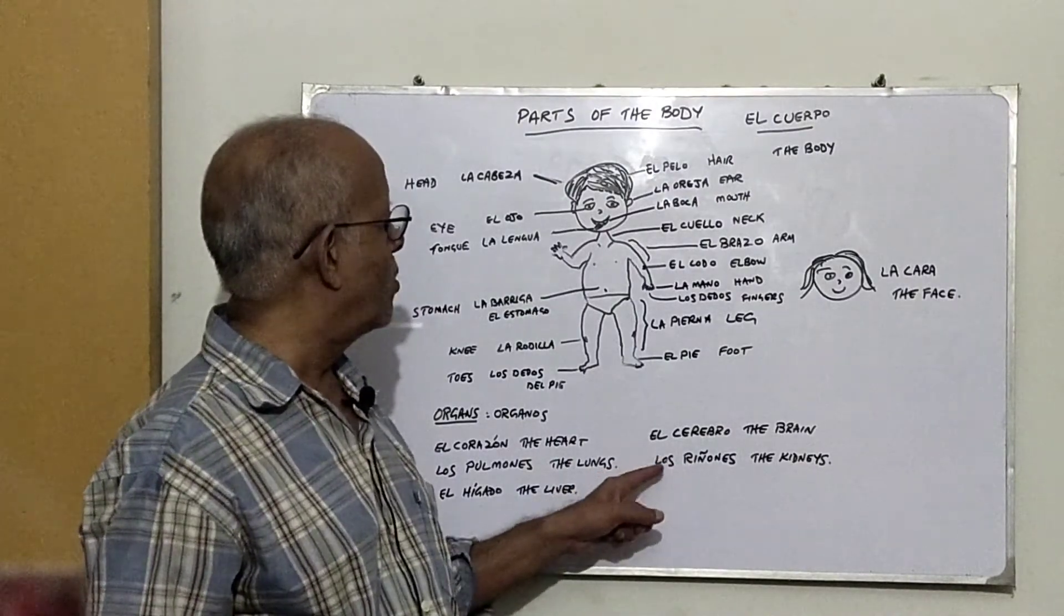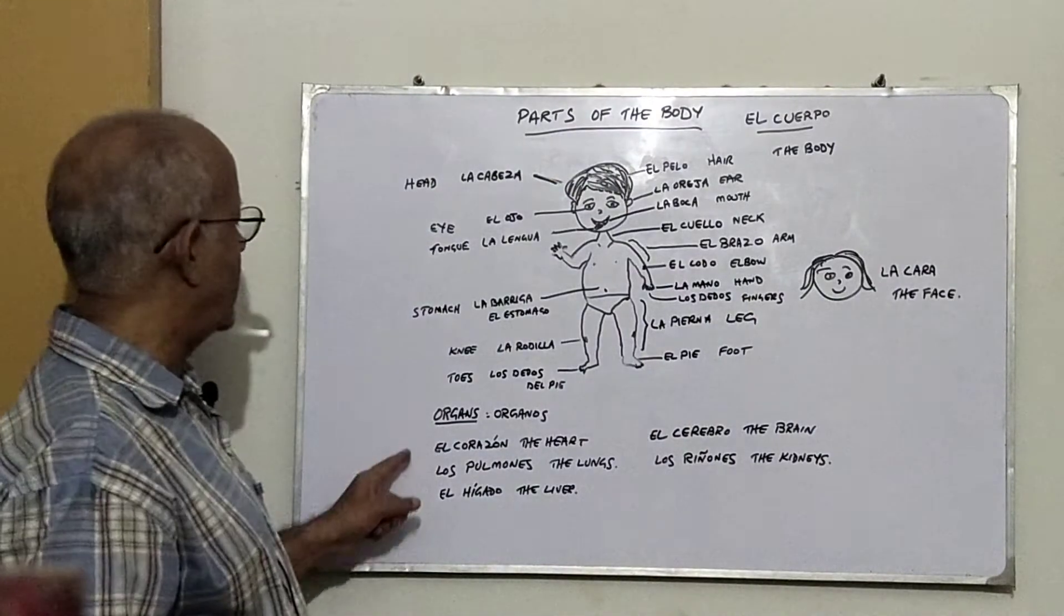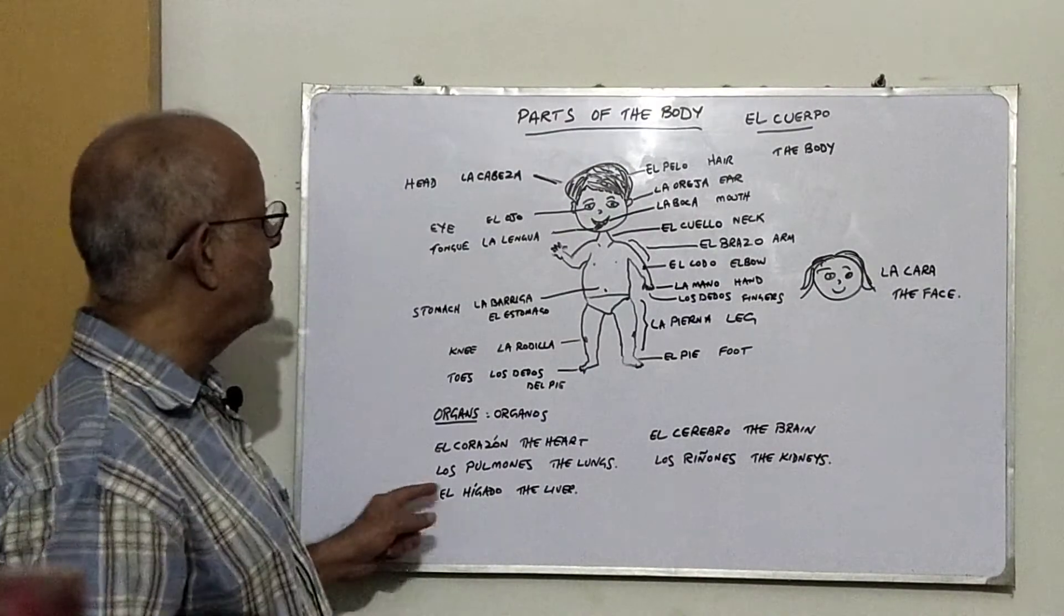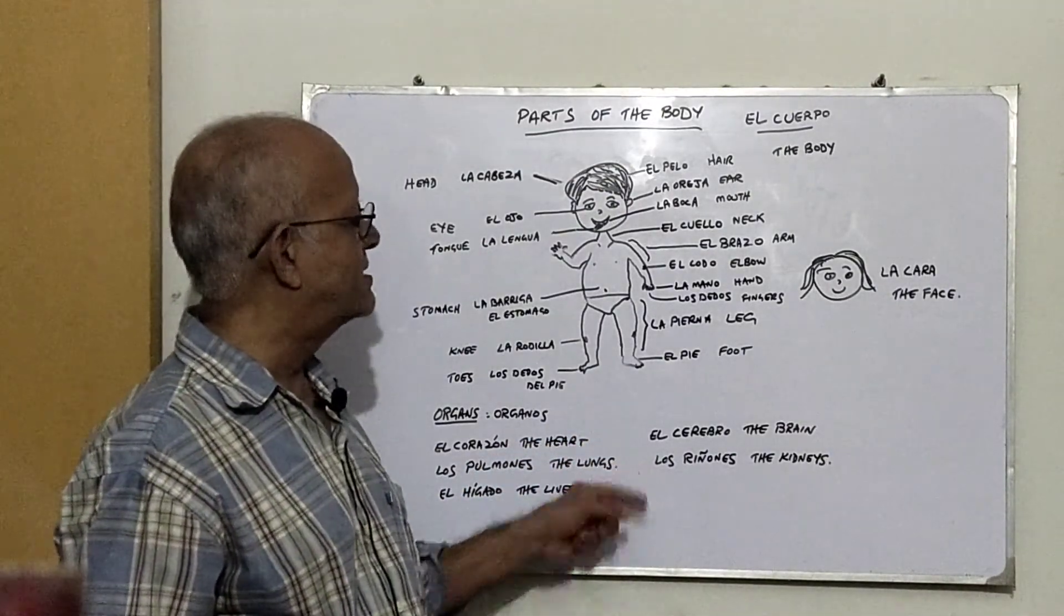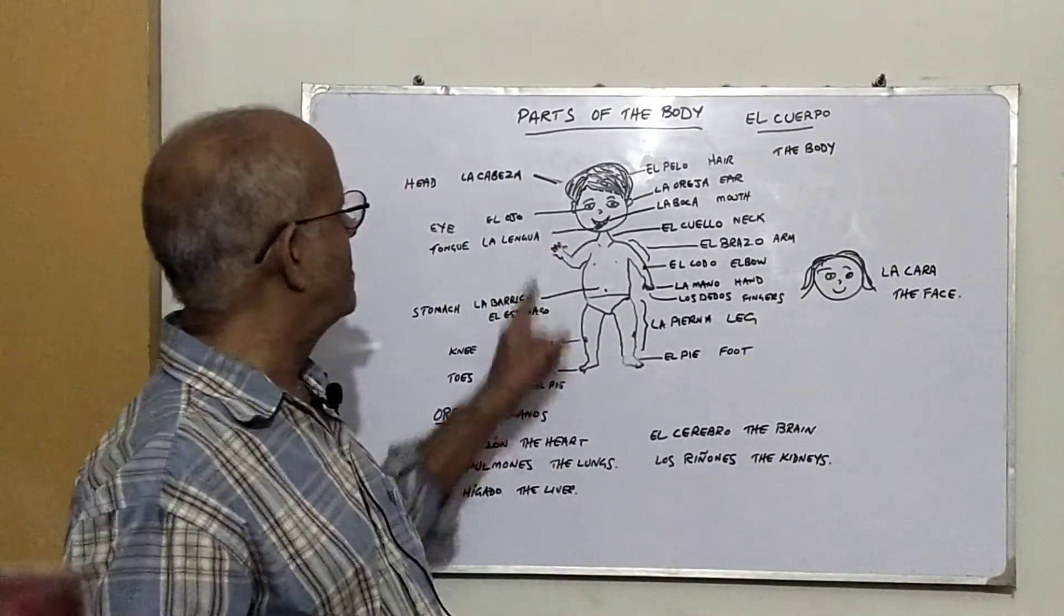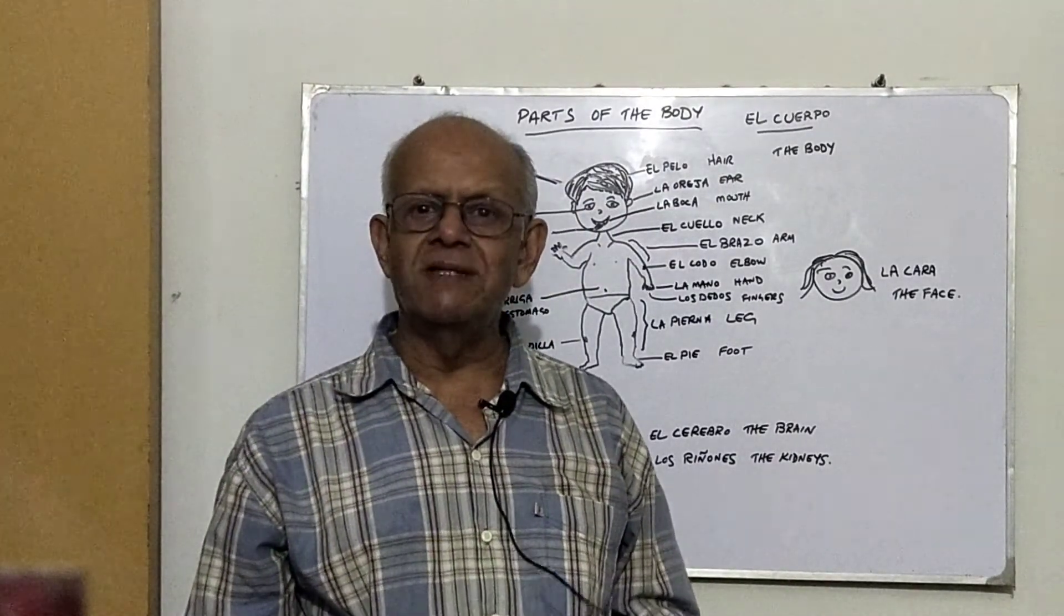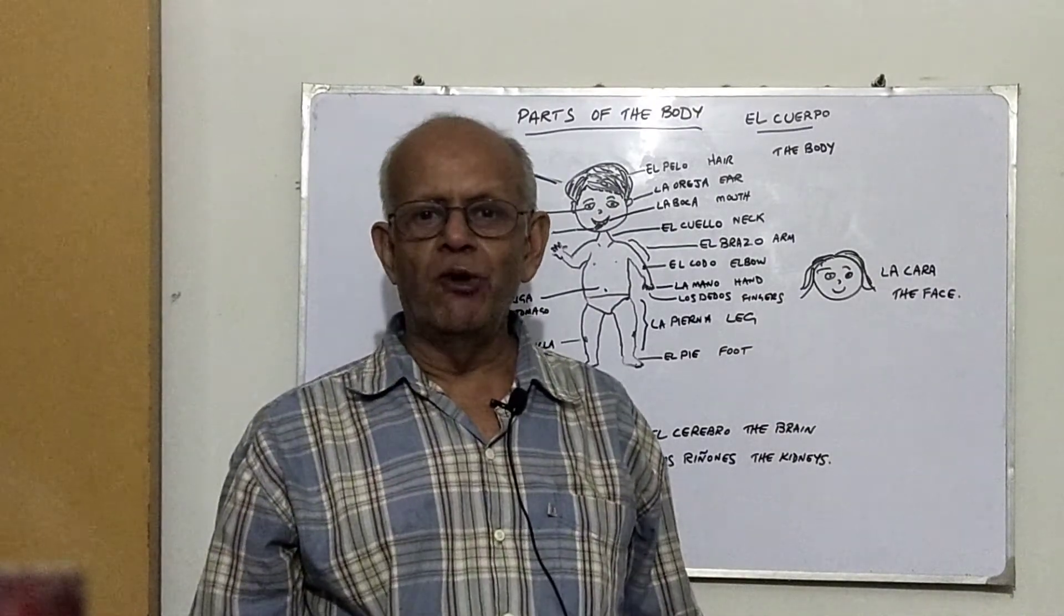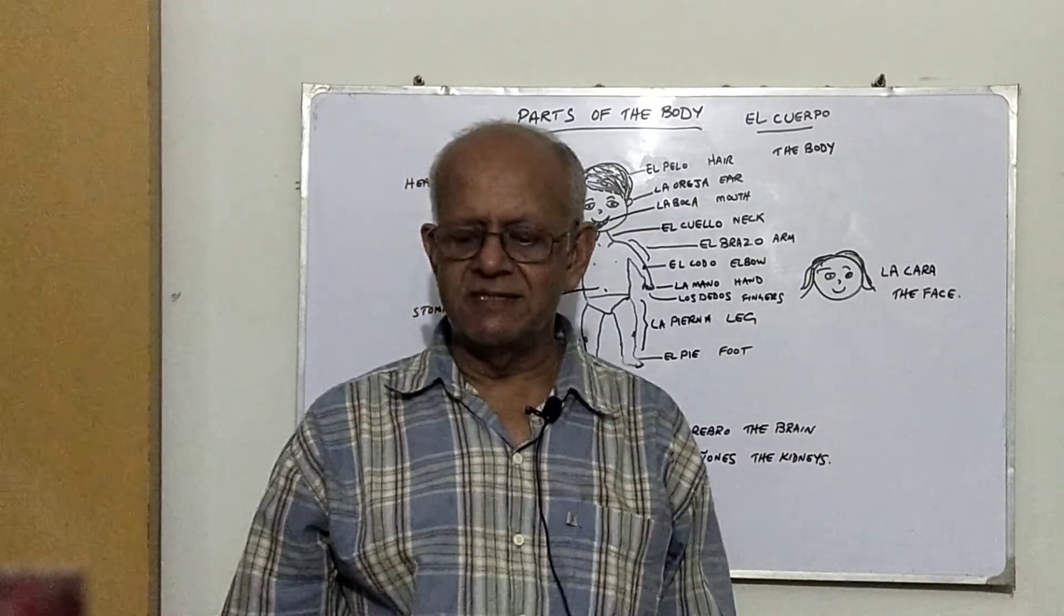And the kidneys - los riñones. So organs: el corazón the heart, los pulmones the lungs, el hígado the liver, el cerebro the brain, and los riñones the kidneys. So my friend, this was our short class today on parts of the body - el cuerpo, las partes del cuerpo. Hope you enjoyed the class. Leave your comments and questions in the comment section. I will gladly answer them for you. Bueno amigos, until our next class, hasta luego. Muchas gracias, amigos.